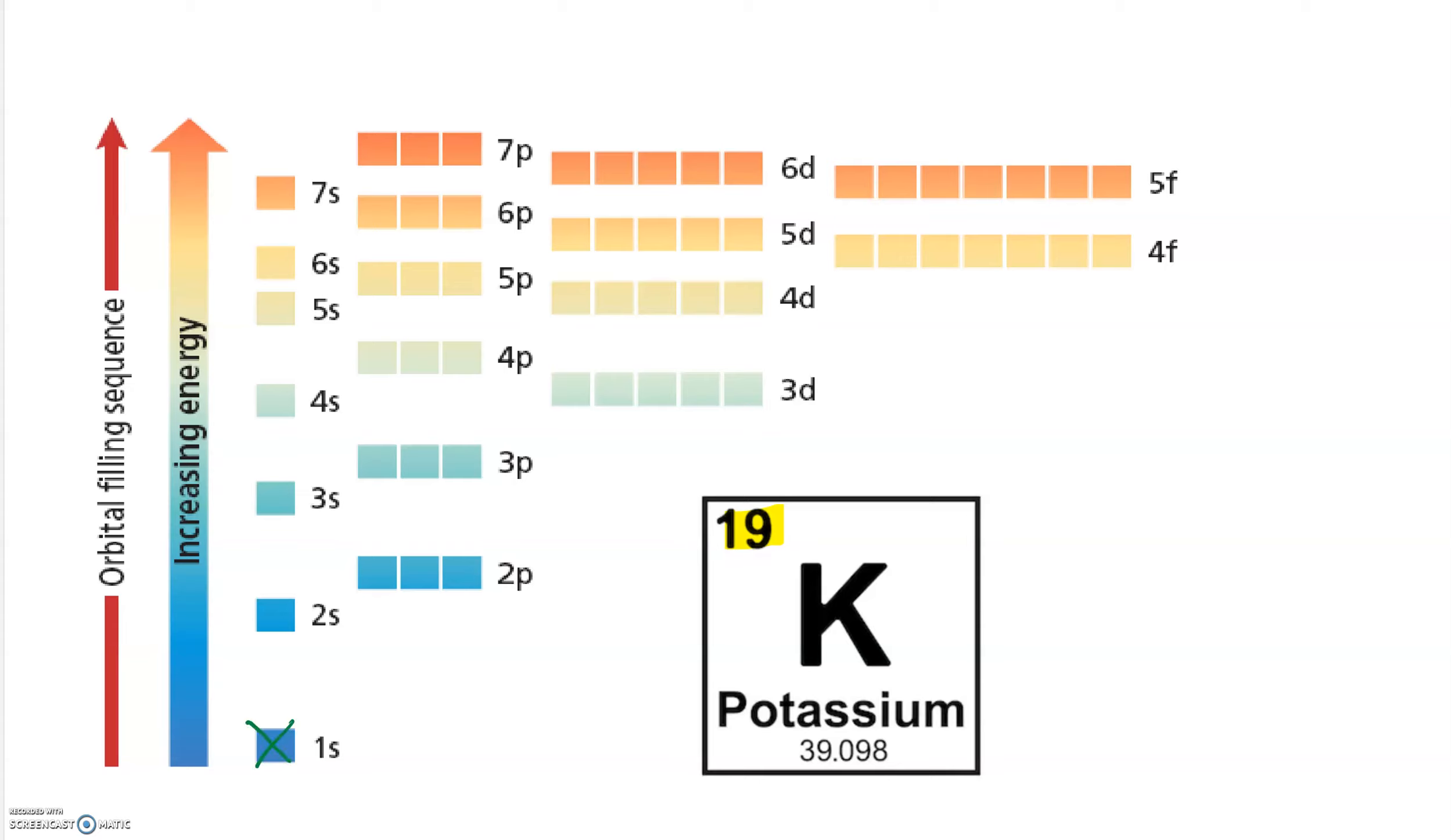And it might have occurred to you that that is why sodium is in the location it's in on the periodic table. And that would be here, which is in the third row and in the first column. It's in the third row because it's filling the third energy level and it's in the first column because it only has one electron in the third energy level.